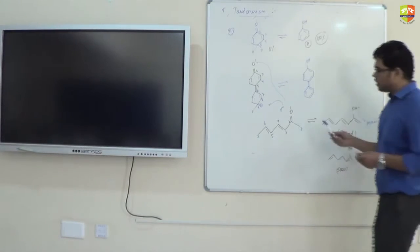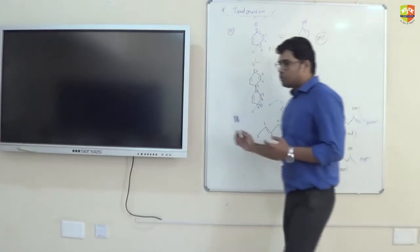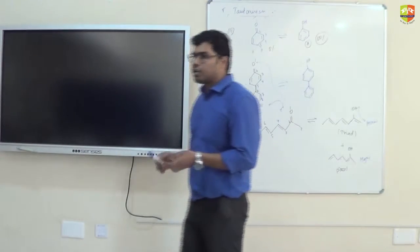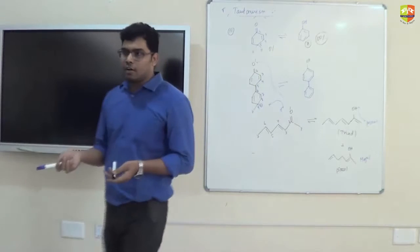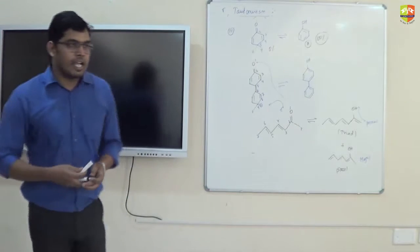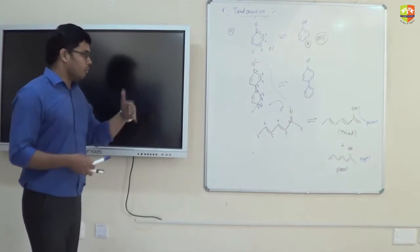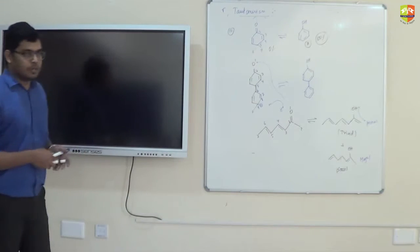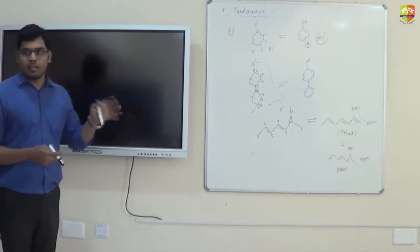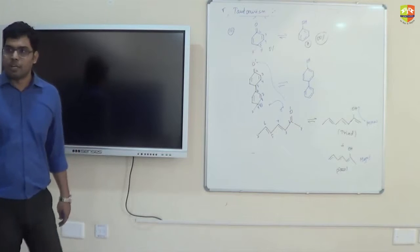So whenever you see any molecule, you draw all the structures, whether it is triad or space. And then you decide which one is more stable. And according to that, you get the major or minor product.